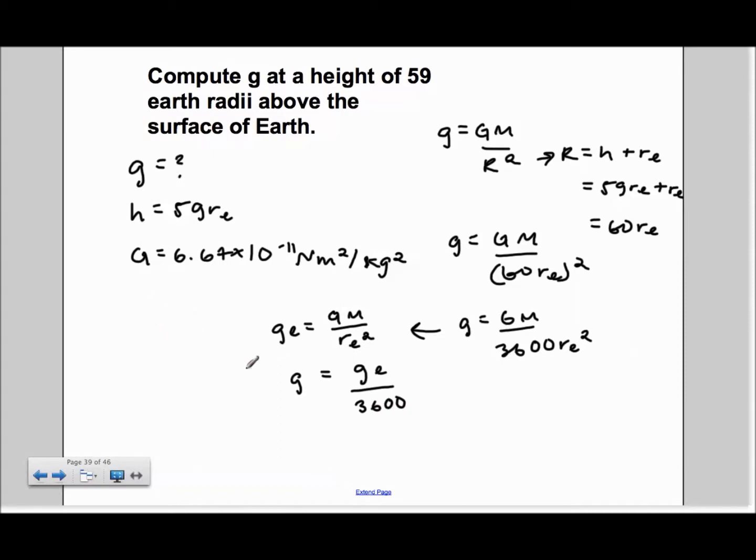We know that GE is 9.8 meters per second squared. So we can just plug that back into the formula to get an answer for g.